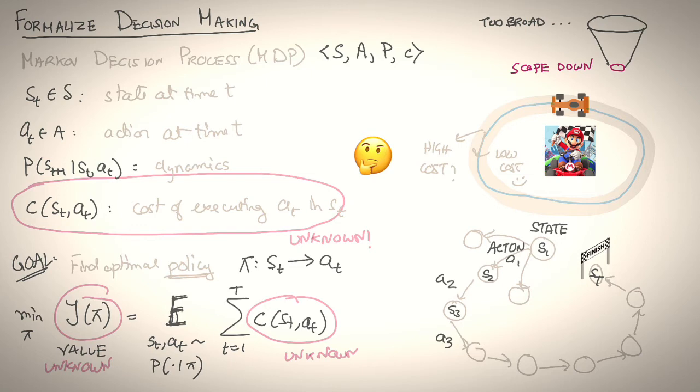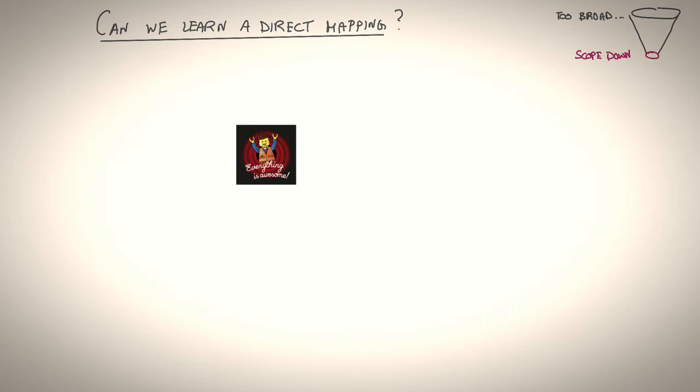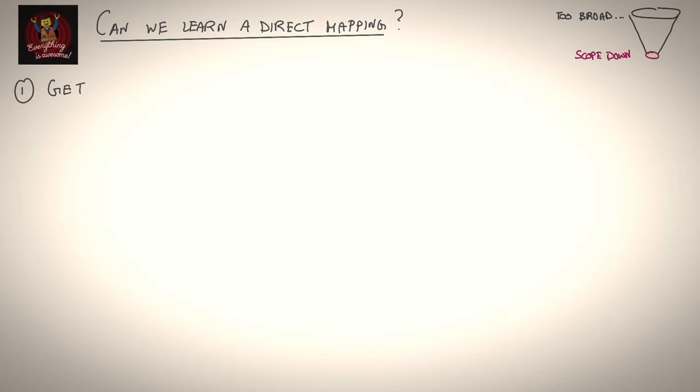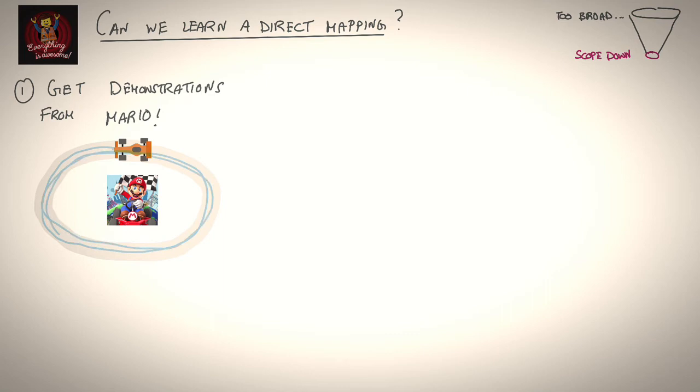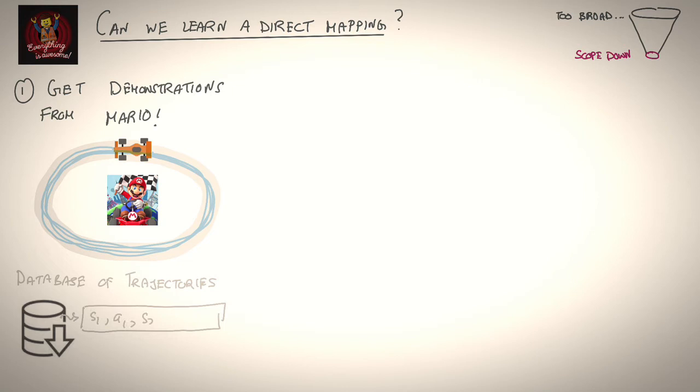Perhaps we're overthinking this. What if we try something really simple, like learning a direct mapping from states to actions from expert data? That sounds like an awesome idea. So let's think through the steps. Step one is to get demonstrations from Mario driving. This involves having Mario drive around the racetrack and recording these trajectories. So you create a database of trajectories where every element of the database is a sequence of states, actions, next state, and so on.